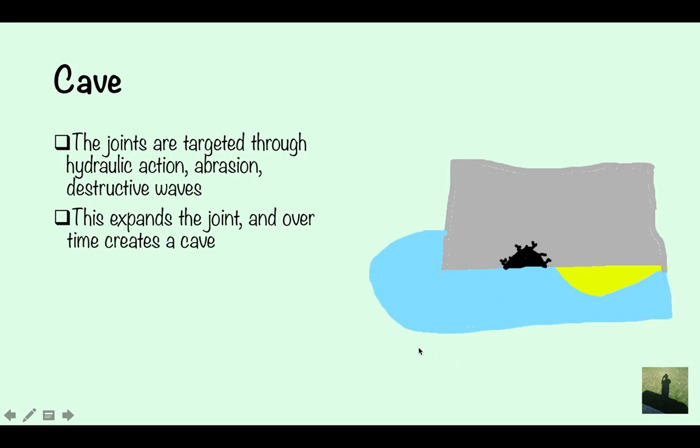This joint is targeted through hydraulic action, abrasion and destructive waves. This expands the joint and over time creates a cave. So you can see here, the joint has been expanded through erosion and it's created a cave.